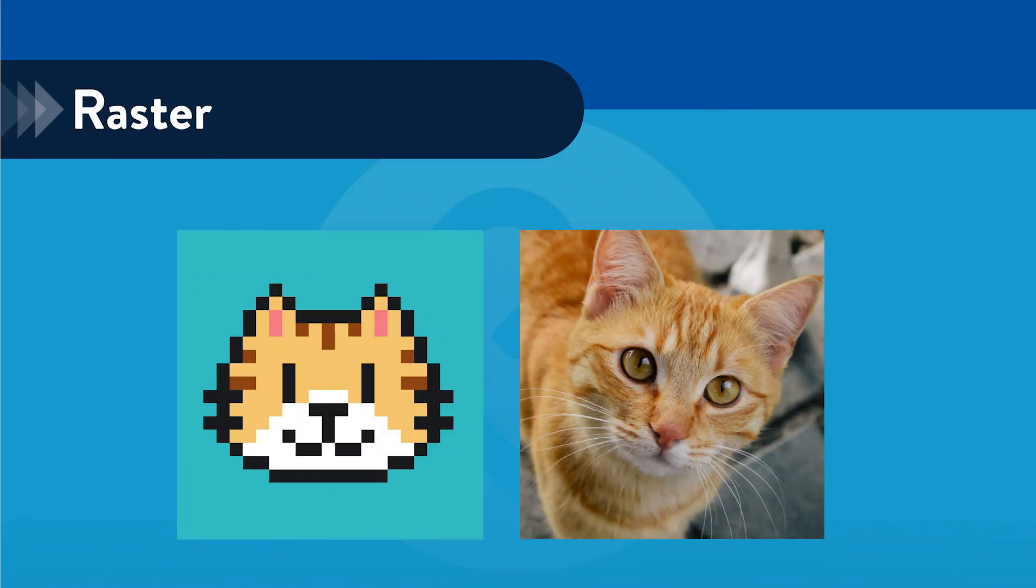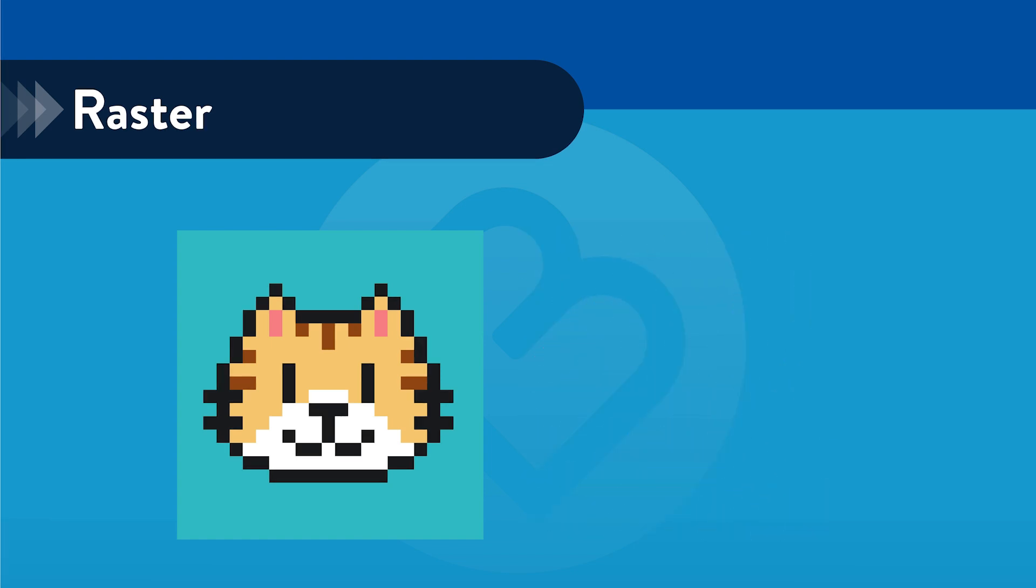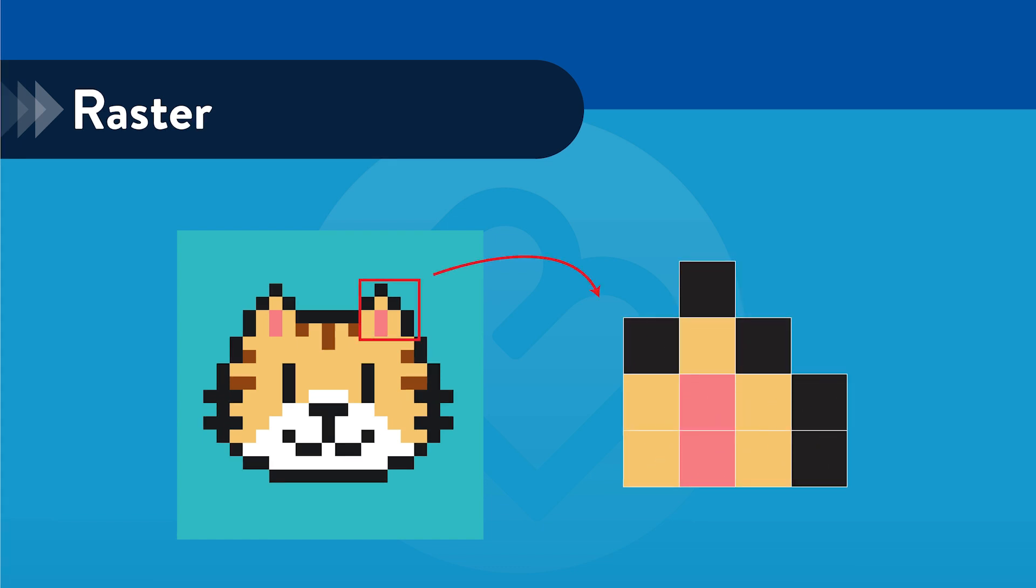Now let's talk about raster images. Unlike vector images, raster images are made up of a grid of individual pixels where each pixel has its own color. You can think of it like a mosaic where each small tile represents a pixel.